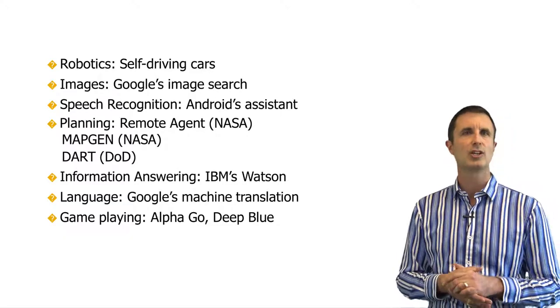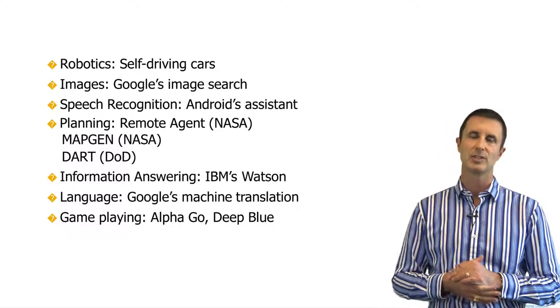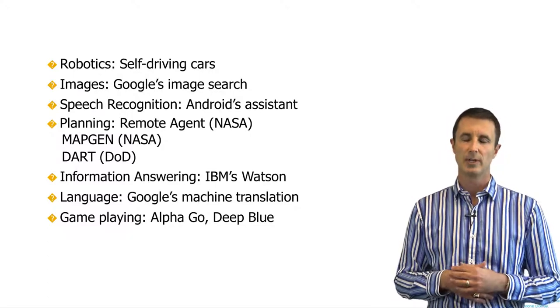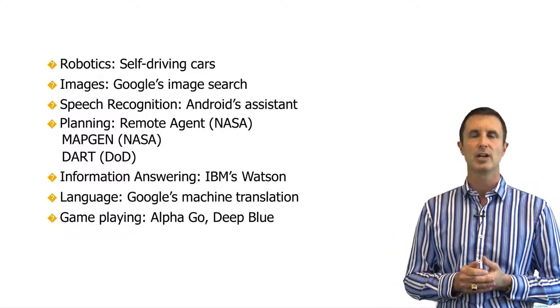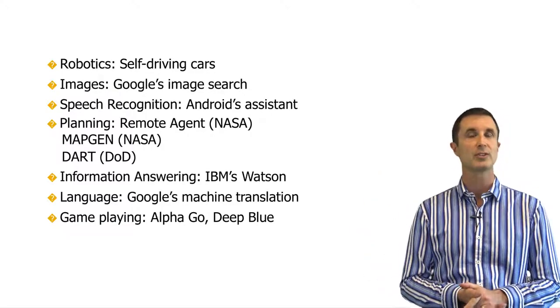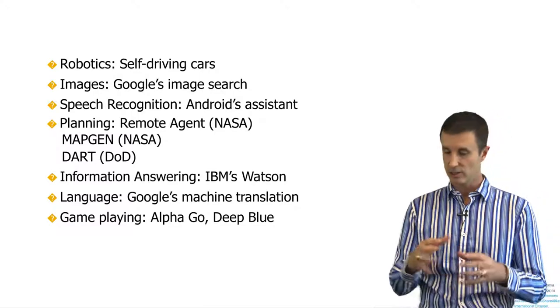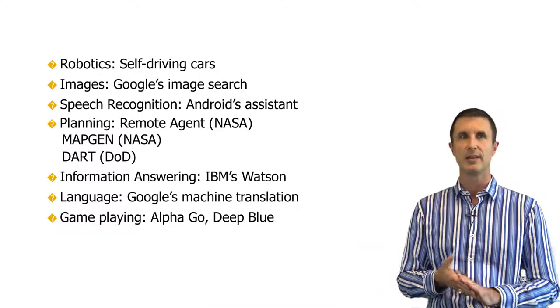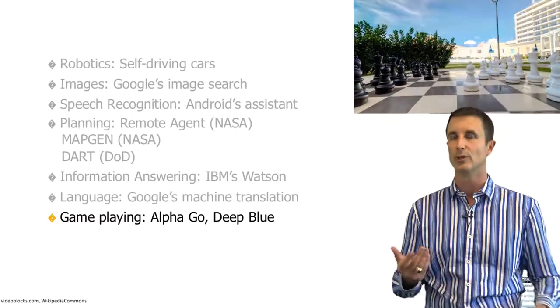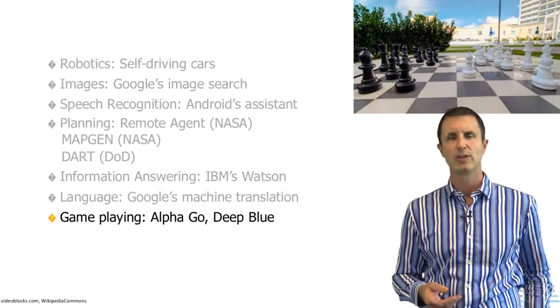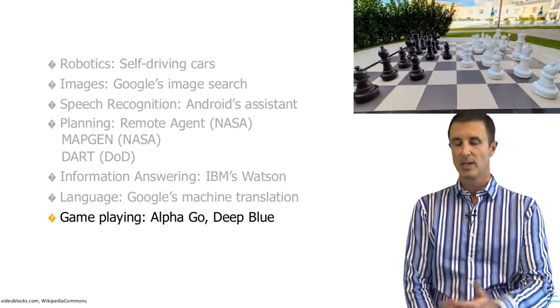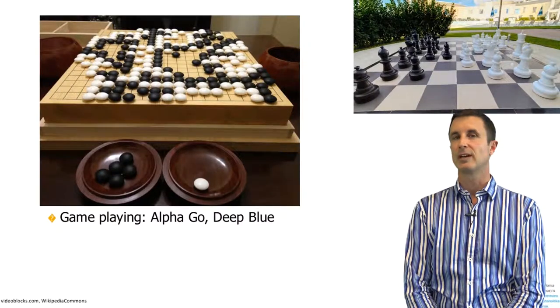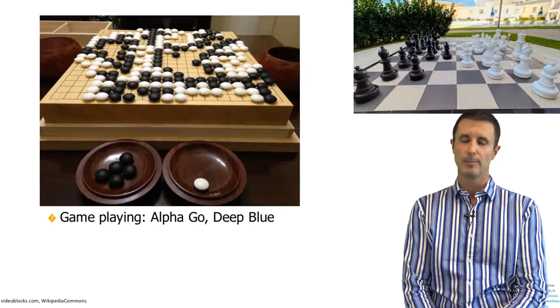Information answering, you know, IBM Watson or even your Siri assistant is about at the current level. Language, you can go to Google's machine translation, certainly in a general broad sense that's about the level. And then in game playing, AlphaGo and Deep Blue are certainly, there's one slightly better than AlphaGo now, but we have things that basically play Go and chess at the level of human beings, if not quite a deal, a bit above.